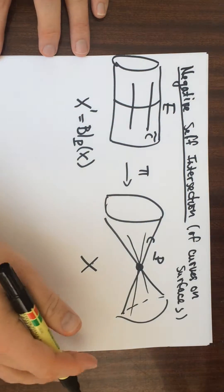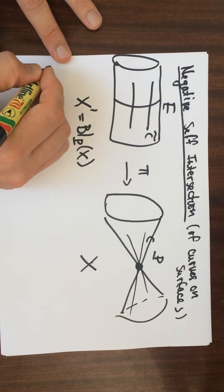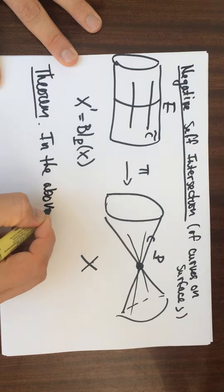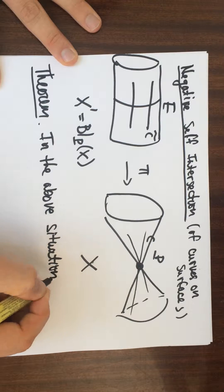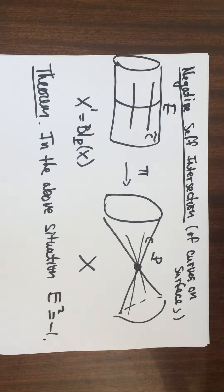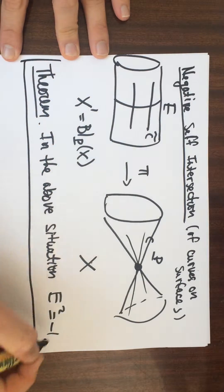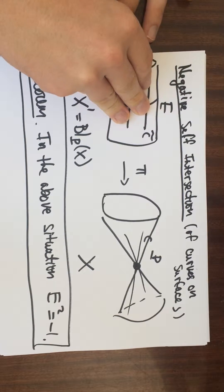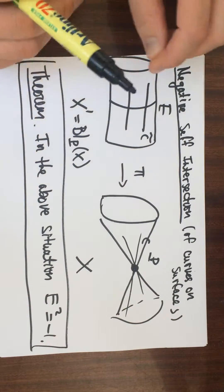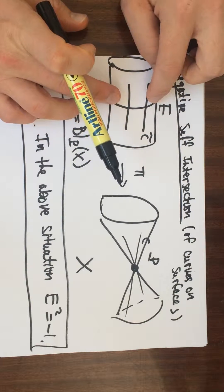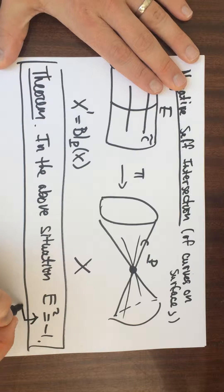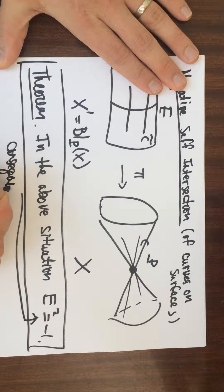What I want to show is that in this situation, the theorem I want to show is that E squared — the self-intersection of E — is minus 1. You can actually have things with self-intersection minus 1, and this is just due to the intersection number. You shouldn't try and twist it and move this E around so that this happens. It actually comes from algebra — it's a consequence of algebra.